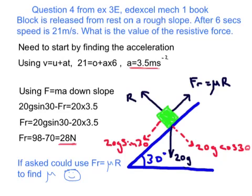If we did want to find μ, we could simply put that 28 equal to μR, find R by resolving there and rearrange. But it hasn't asked us to, so we're not going to.